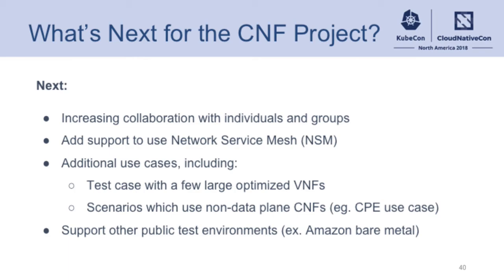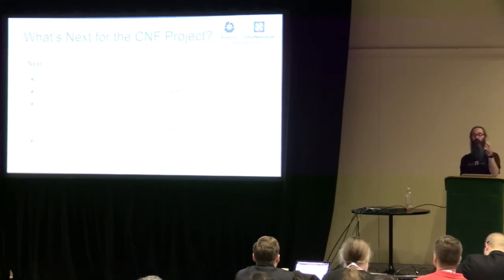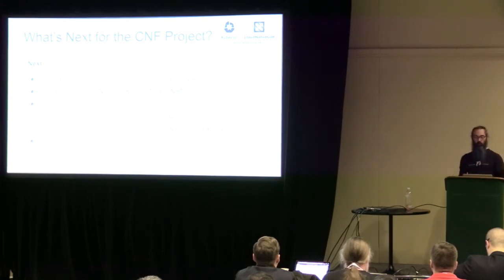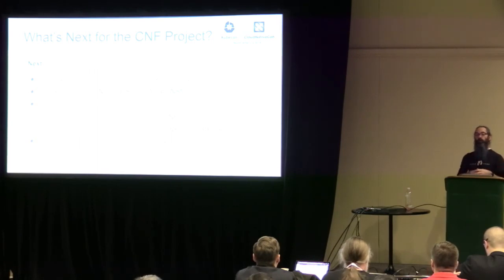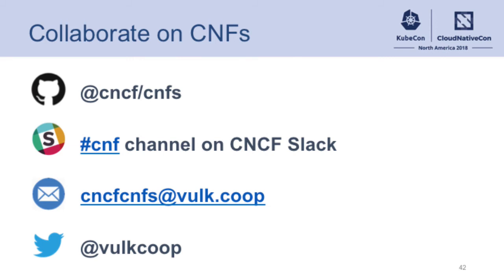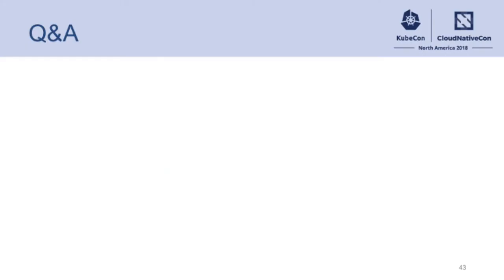We talked about adding Network Service Mesh — we're planning on adding that for the Kubernetes use case. We would like more collaboration: if you have use cases that would be an optimal setup for VNFs or something you want to create for CNFs, we'd love feedback on that. We want to support more environments — we also support the FDIO CSIT lab and we're going to keep adding more. Collaborate with us on the CNCF Slack channel and CNF GitHub.